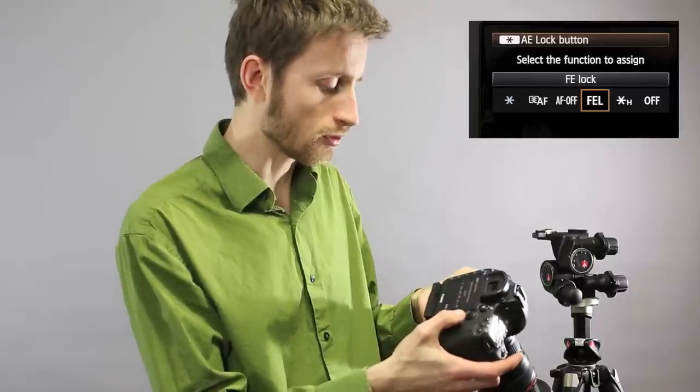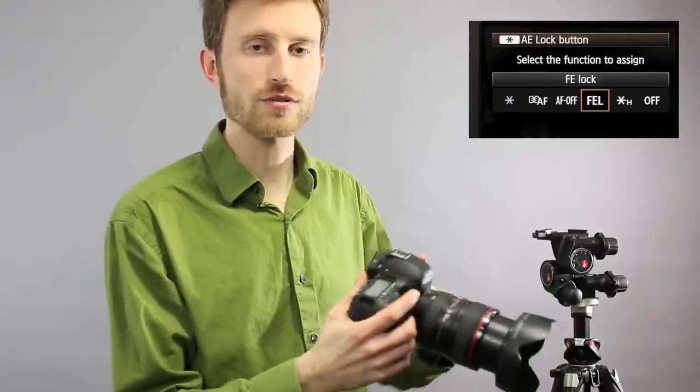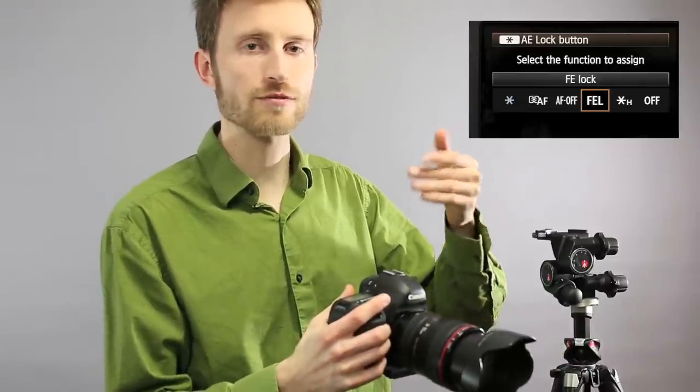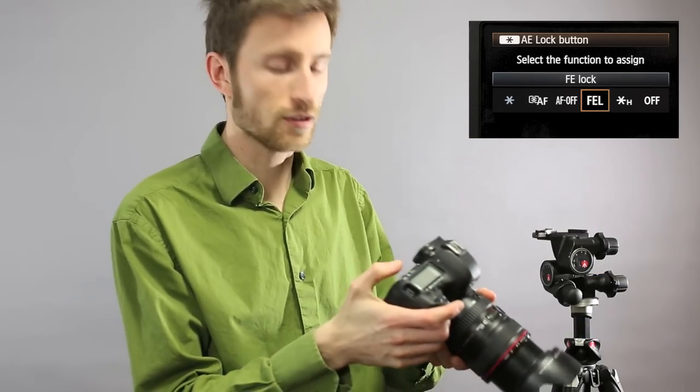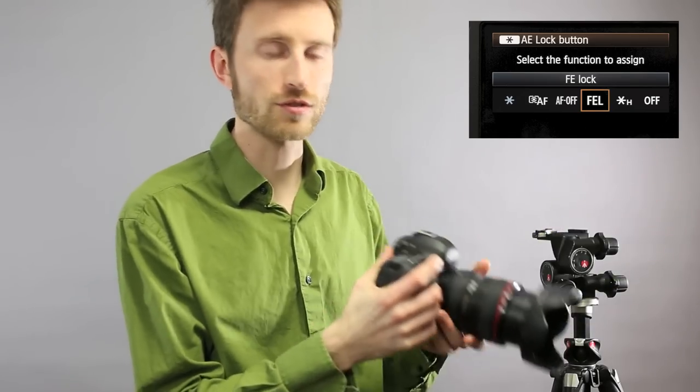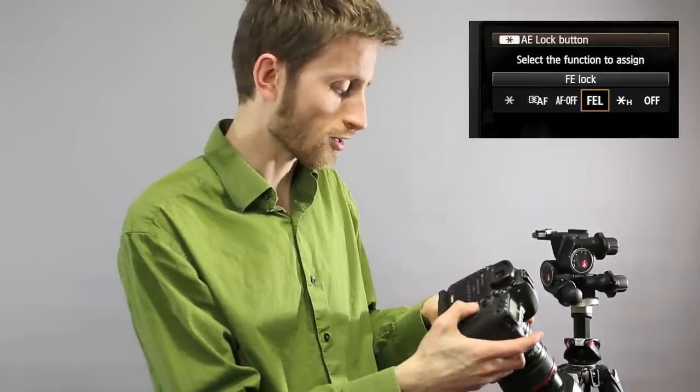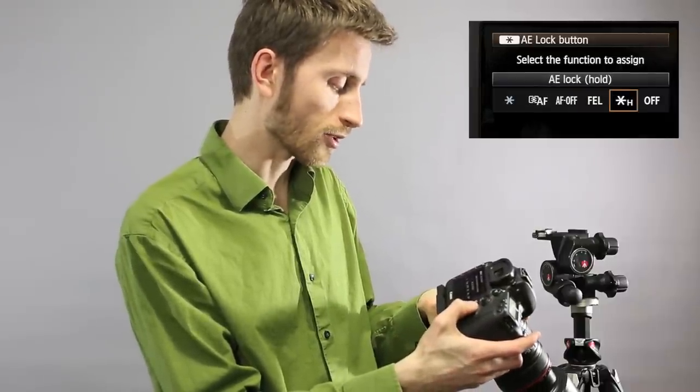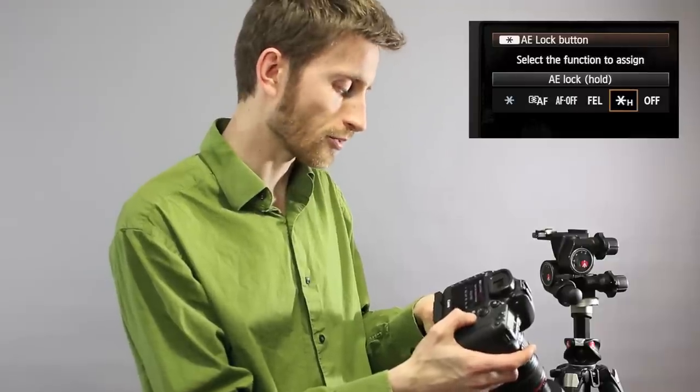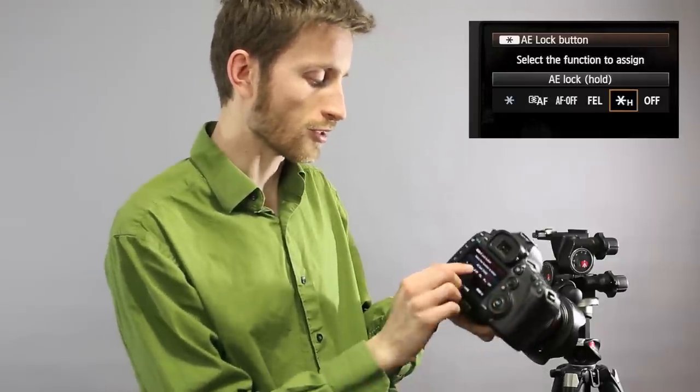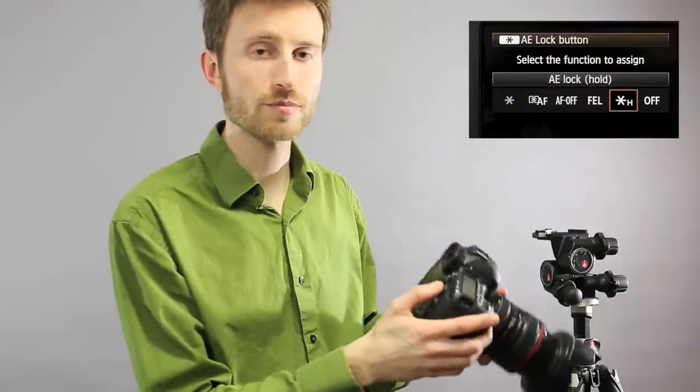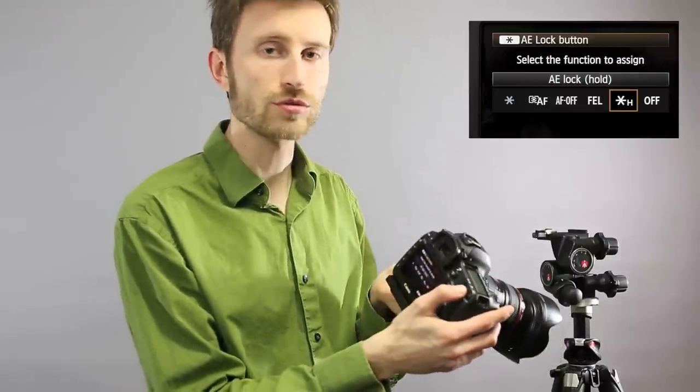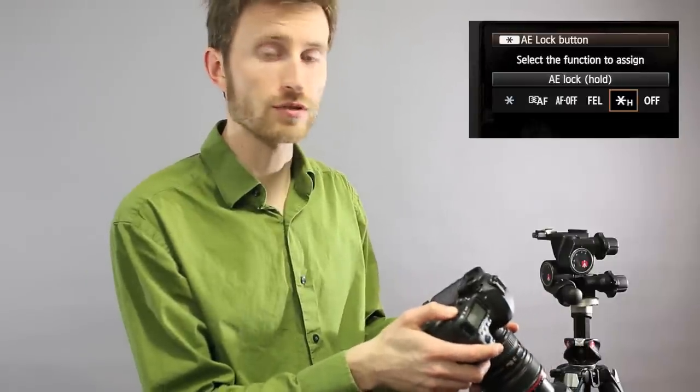FE lock, that's flash exposure lock. So if you want the flash power output not to adjust up or down from whichever situation you're pointing your camera at, you can press that. Auto exposure lock, talked about that in the first place. In this case it says hold so you're going to be able to lock the exposure when you hold that button down which is kind of a neat way to use the tool.